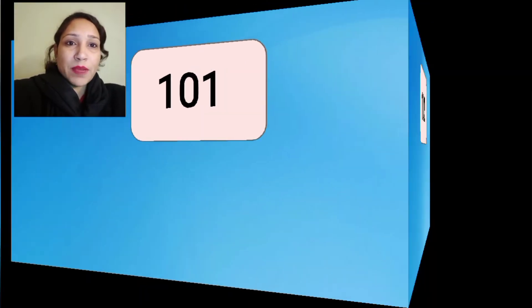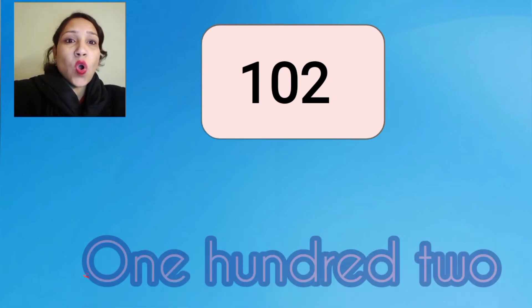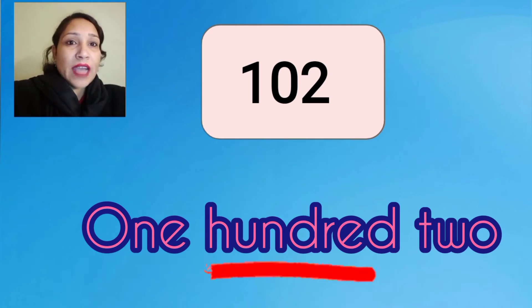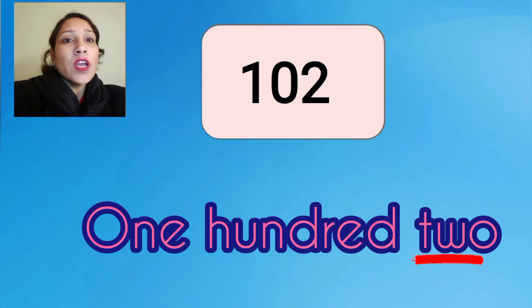The next number is 102. The spelling of 102 is O-N-E, one; H-U-N-D-R-E-D, hundred; T-W-O, two. 102: one hundred two.